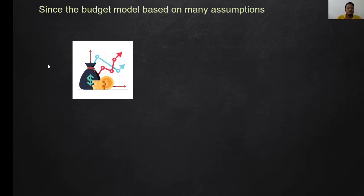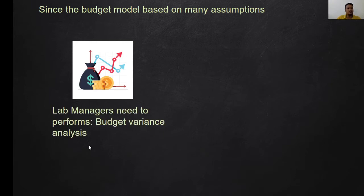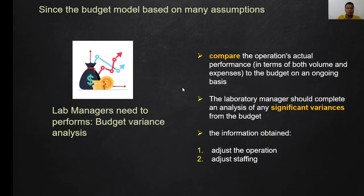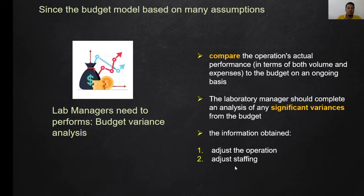As we are already aware, even for our own personal budget, a budget model is based on many assumptions. So lab managers need to perform a budget variance analysis — that means they need to compare the budget from last year with the spending for this year so we can have a proper amount for the next year. The laboratory manager should complete an analysis of any significant variances, meaning differences from the budget. The information obtained from this analysis can be used to adjust operations or even staffing for the next year.